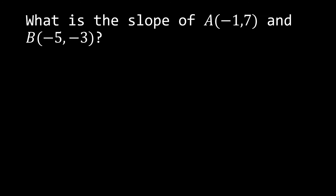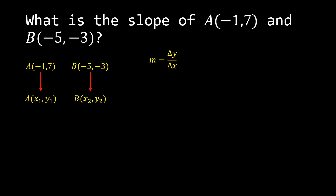Here's an example. What is the slope of A(-1, 7) and B(-5, -3)? Point A is represented by x sub 1, y sub 1, and point B, which is (-5, -3), would be represented by x sub 2 and y sub 2.